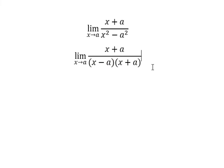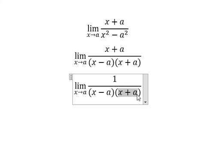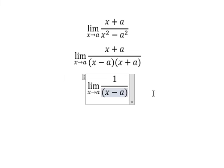So we simplify, and we can see that if I put A in here, so one divided by A minus A, you got number zero.